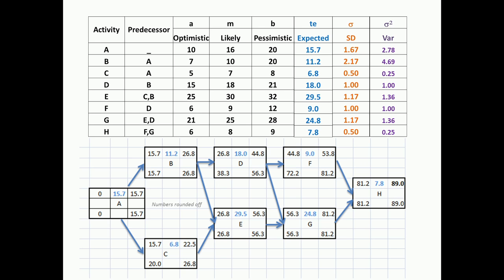In the next step, we take the expected values — A is 15.7, B is 11.2, C is 6.8, D is 18. We use the expected values as the basic duration of each activity and perform the forward pass and the backward pass, giving us the early start and early finish for all activities. Some of these values are rounded off. When we add the activities up, you can take a guess at what the critical path is. Ultimately, H finishes on 89, so that is the project duration — 89 days.